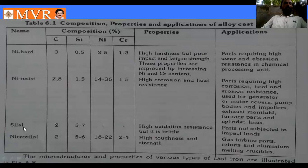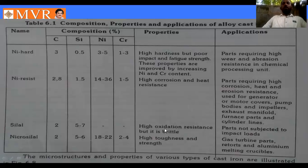For Silal, the composition uses carbon ~2%, silicon 5–7%, with no nickel. Its properties include high oxidation resistance, but it is brittle. Applications are limited to parts not subjected to impact loads.